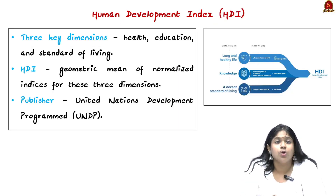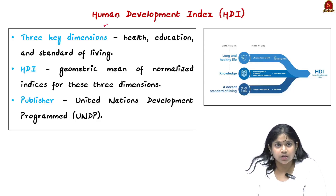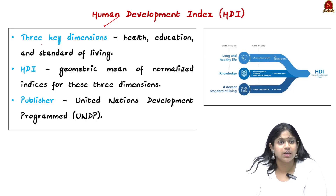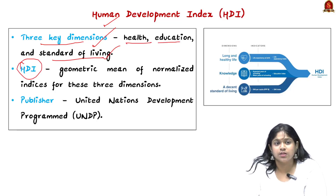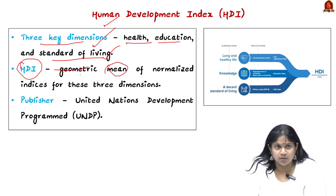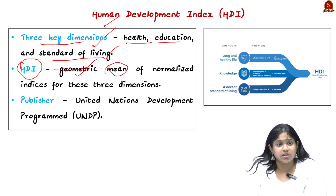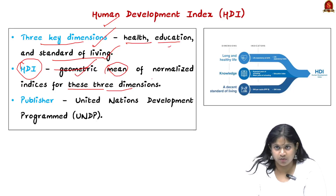Let us look into what is the Human Development Index, or HDI. It is a summary index that measures the average of three key dimensions: health, education, and standard of living. HDI can be considered as the geometric mean — the numerical average of the normalized indices of these three dimensions.